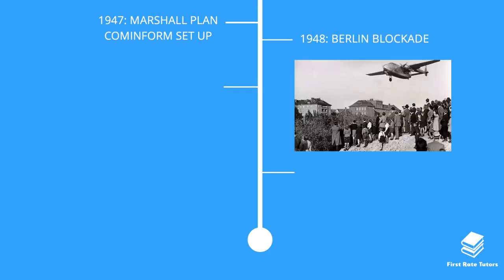In 1948 there was the Berlin Blockade. Stalin was angry because western Berlin looked far nicer than eastern Berlin, having received billions in aid, making eastern Germany look comparatively poor. Stalin decided to blockade western Berlin — starving it of supplies — to try and force the Americans out of western Berlin. This essentially marked the Cold War period.